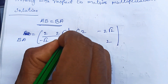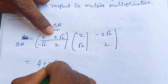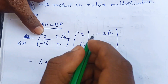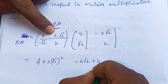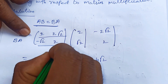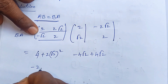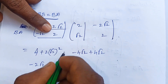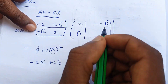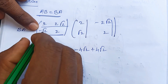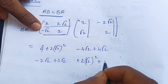Computing AB: first row, first column — 2×2 = 4, plus 2√2 × √2 = 2×2 = 4, giving 4+4 = 8. First row, second column — 2×(-√2) plus (-2√2)×2, with the square root terms combining. Second row entries similarly involve √2 × √2 terms which simplify.